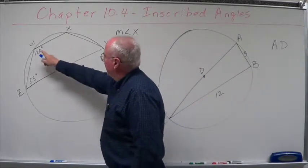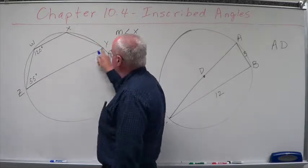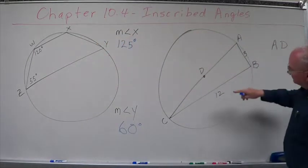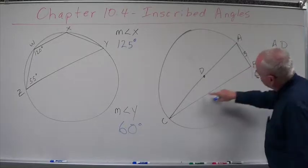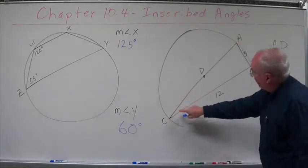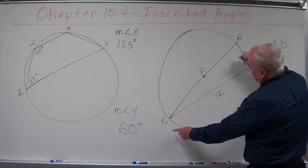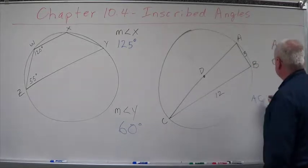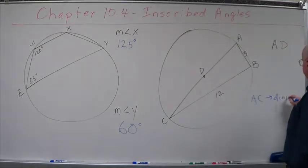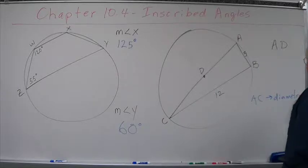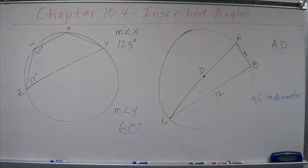Okay, opposite angles are supplementary when you have a quadrilateral. Now, this one, we have an inscribed angle that intercepts a diameter. AC is diameter.